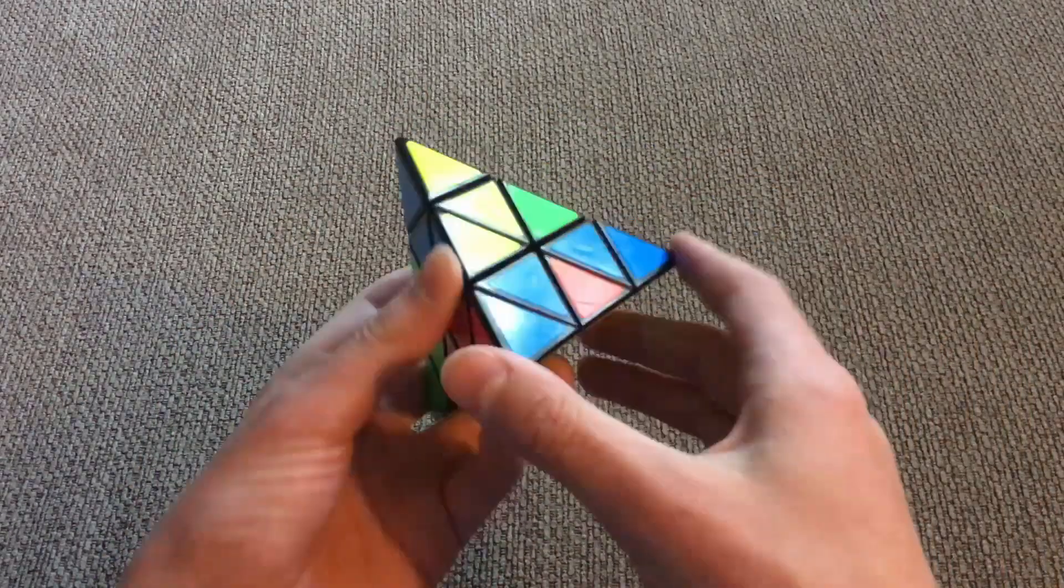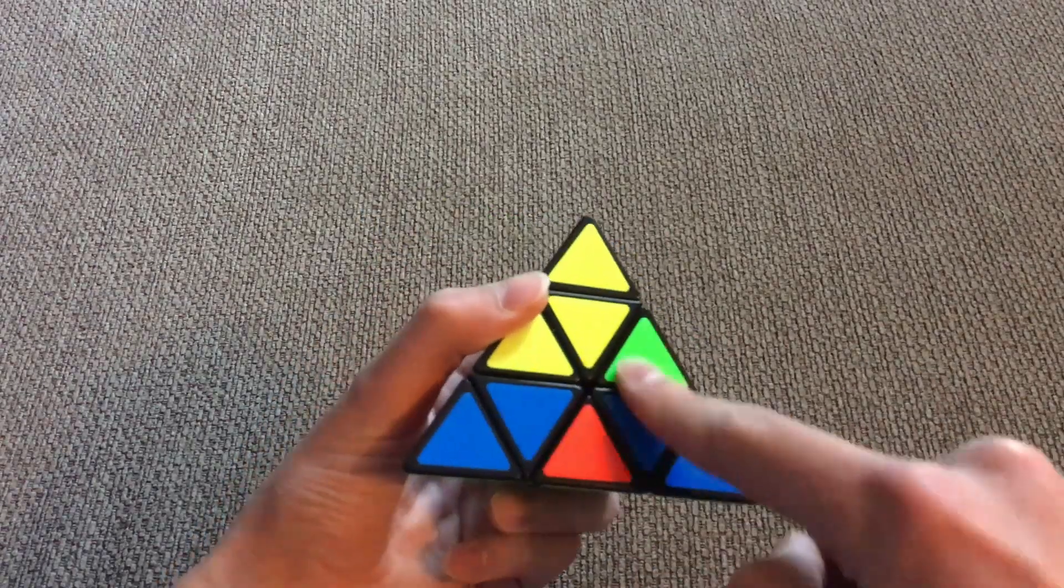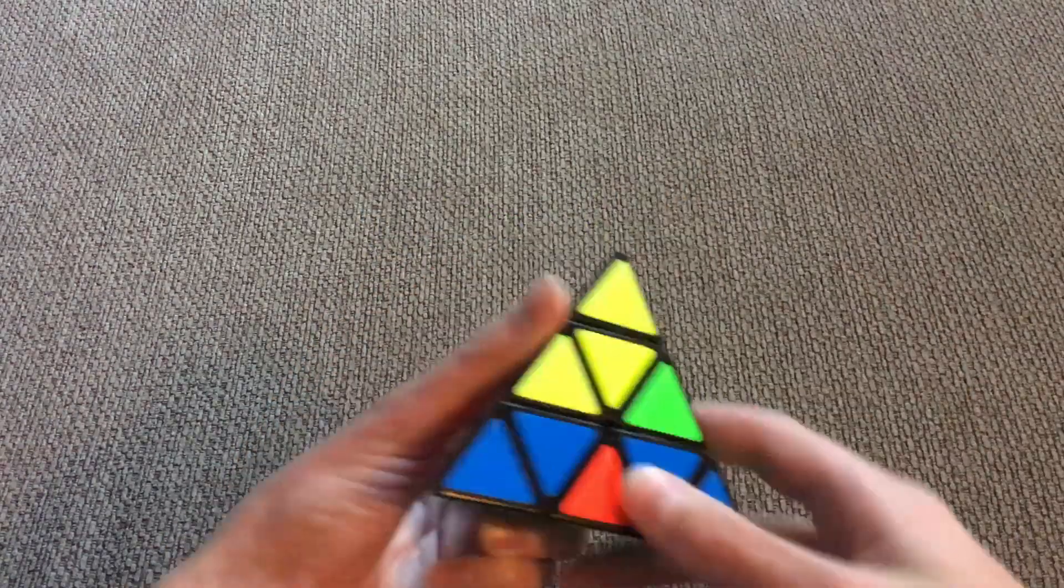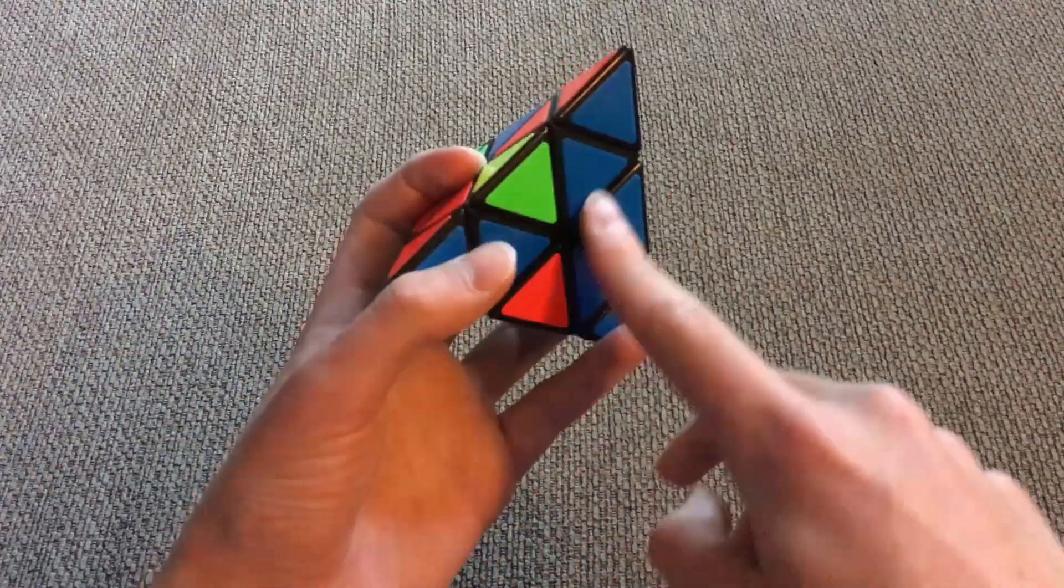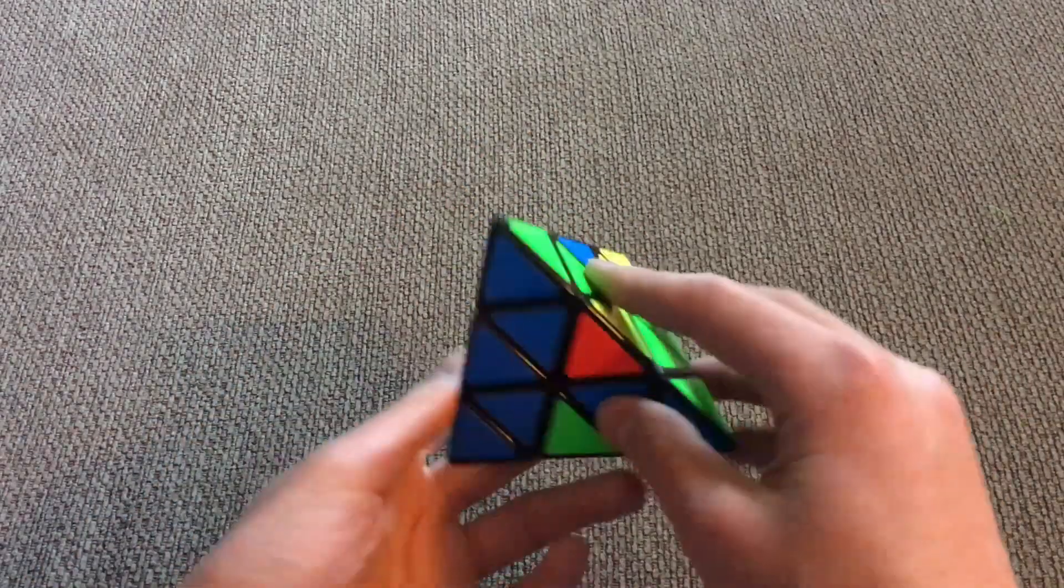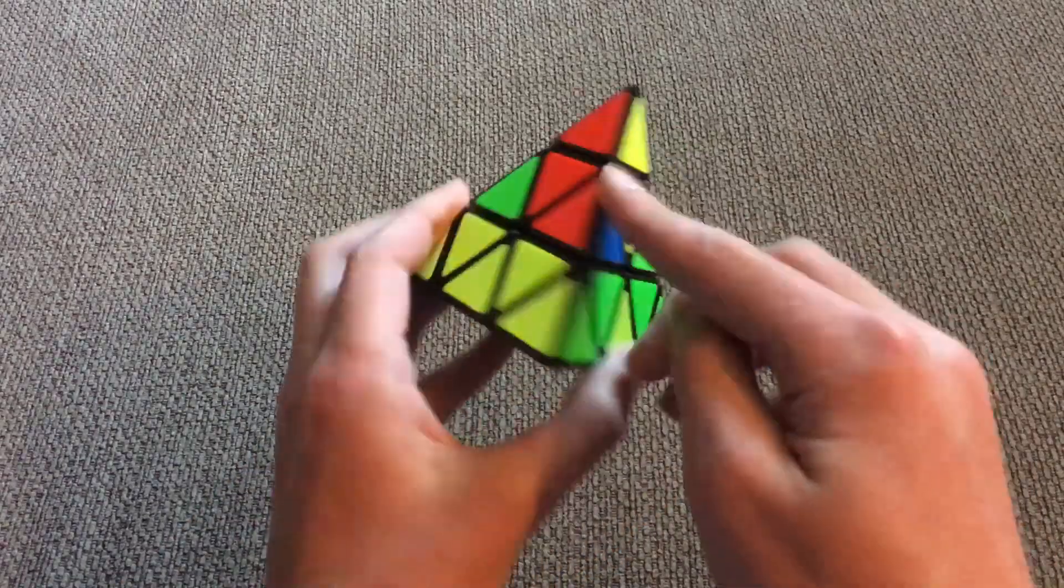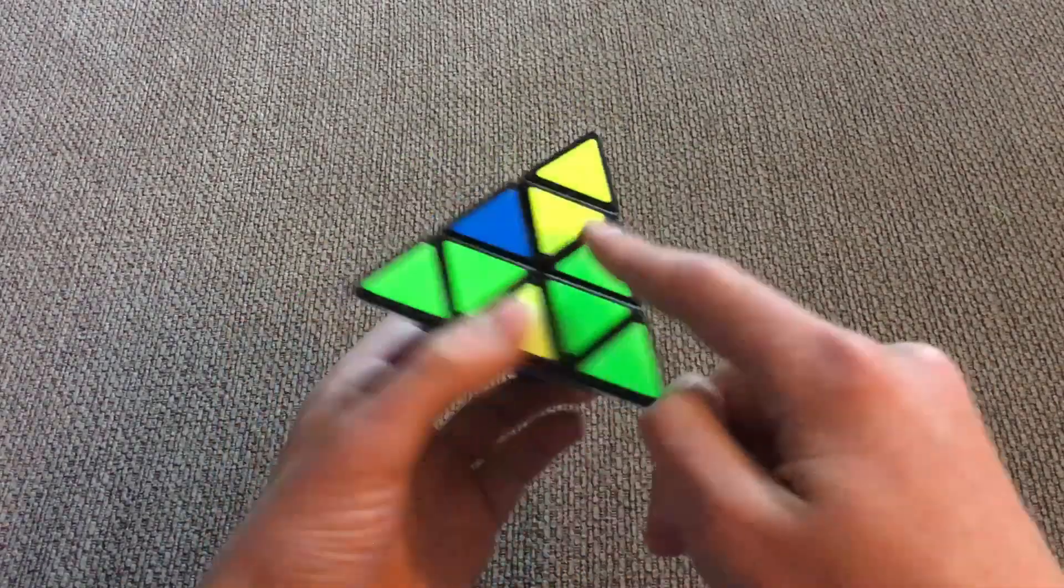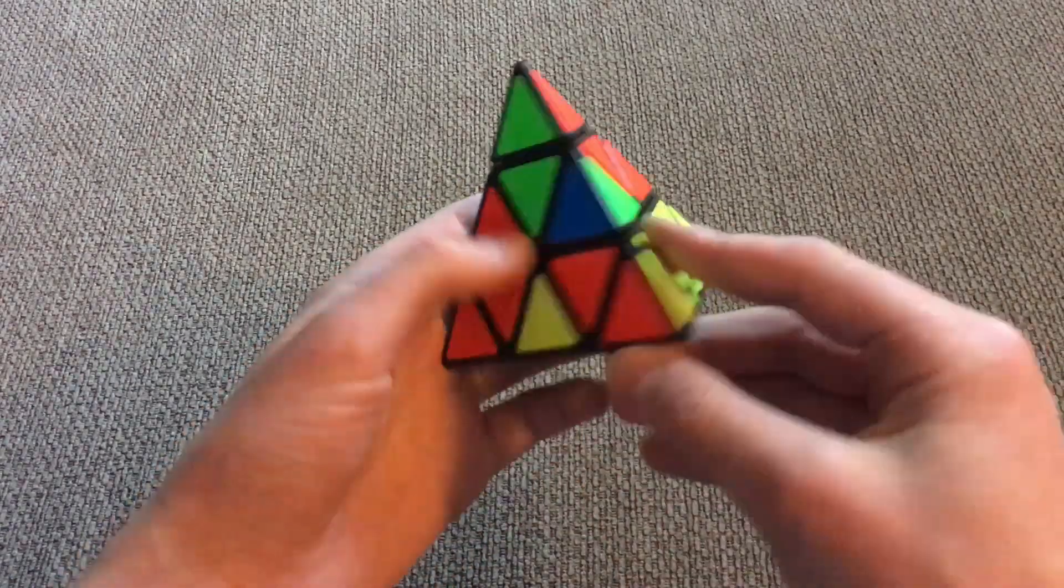What you want to do is these pieces that are connected to the tips, you want to get all of these blue on the same side. So what you want to do is you want to turn all of these until they're all blue on the same side. Now that you have all of these blue on the same side, you have to put the blue on the bottom and look for a blue piece in the second layer that you can use to place in to one of these spots here.